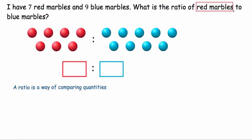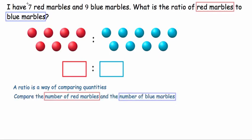So a ratio of red marbles to blue marbles compares how many red marbles we've got with how many blue marbles we've got. And we know that we have 7 red marbles and 9 blue ones. So our ratio is 7 to 9.